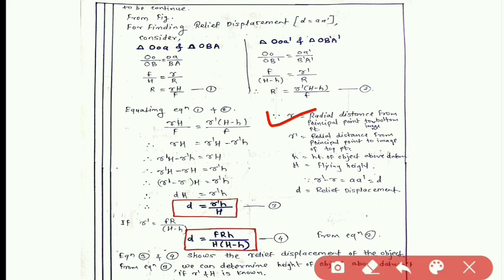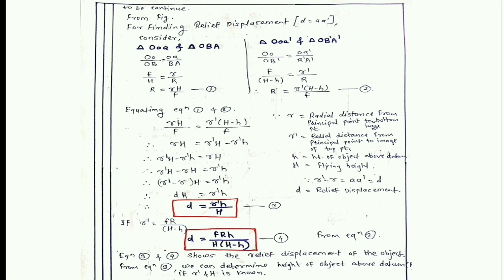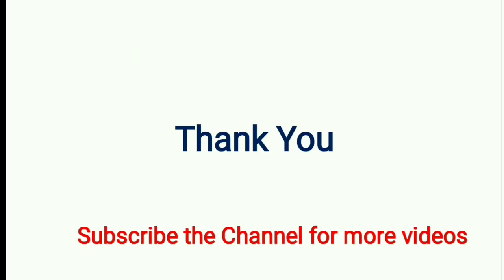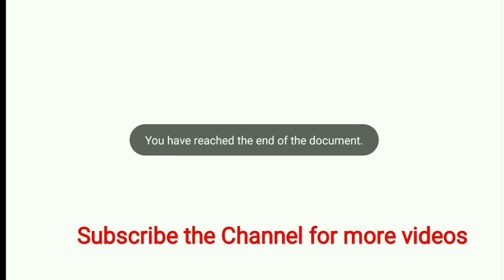To summarize: small r is the radial distance from the principal point to the image of the bottom; r-dash is the radial distance from the principal point to the image of the top; small h is the height of the object above datum; capital H is the flying height; and r-dash minus r equals a-a-dash equals d, the displacement. In this way we can derive the expression for relief displacement. Thank you for watching. If you have any query, please ask in the comment box and please subscribe the channel for more videos.